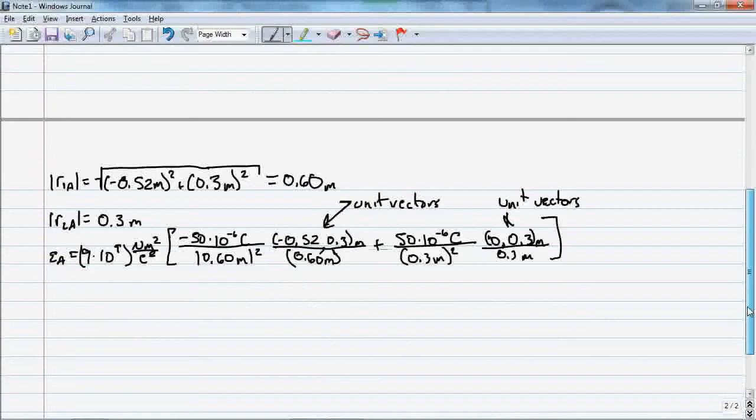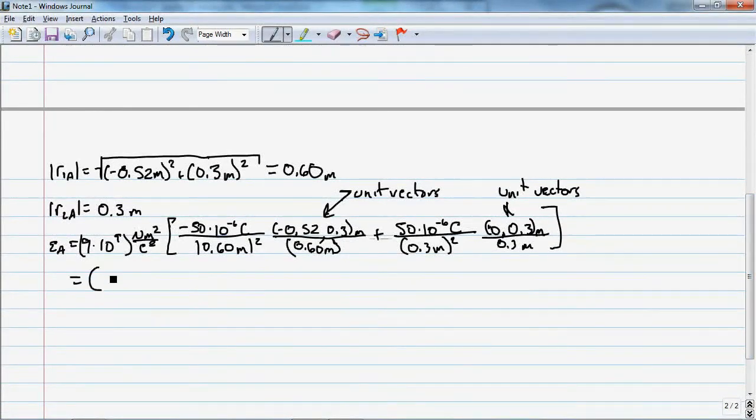And the final result gives me a vector of 1.081 times 10 to the 6th comma 4.372 times 10 to the 6th newtons per Coulomb. And you'll notice that this is my E A X and my E A Y that we had from the previous example. So everything works out. Either way you do it, component or vector view.